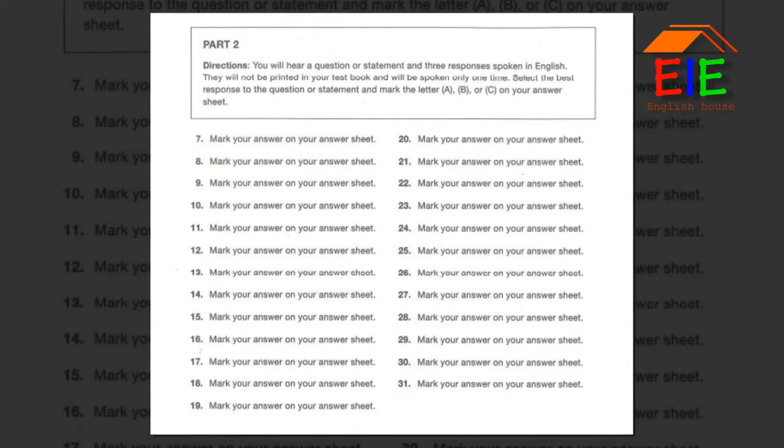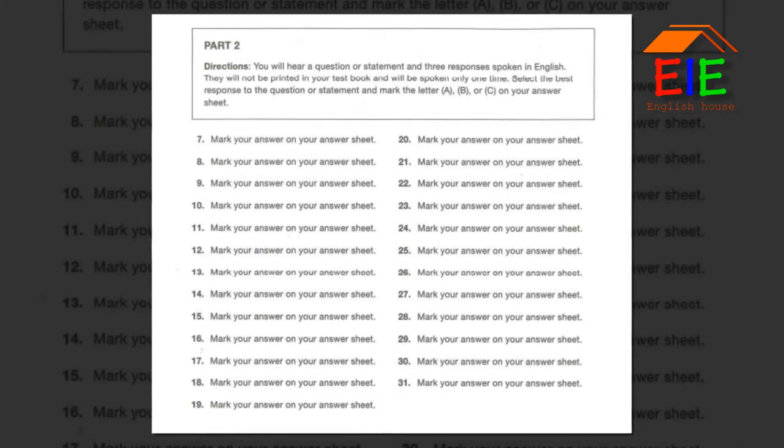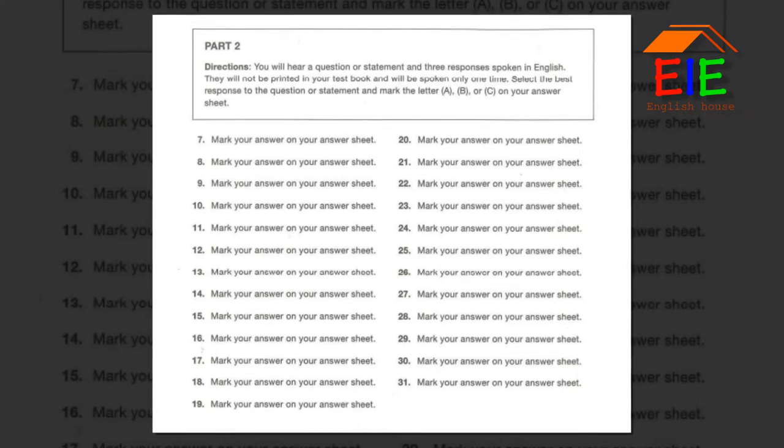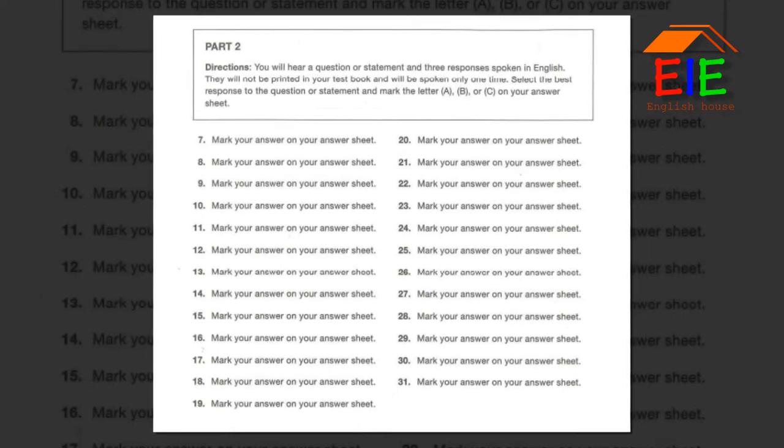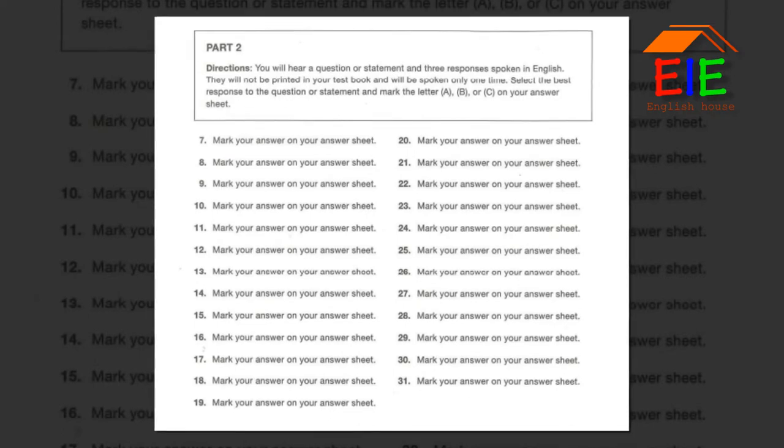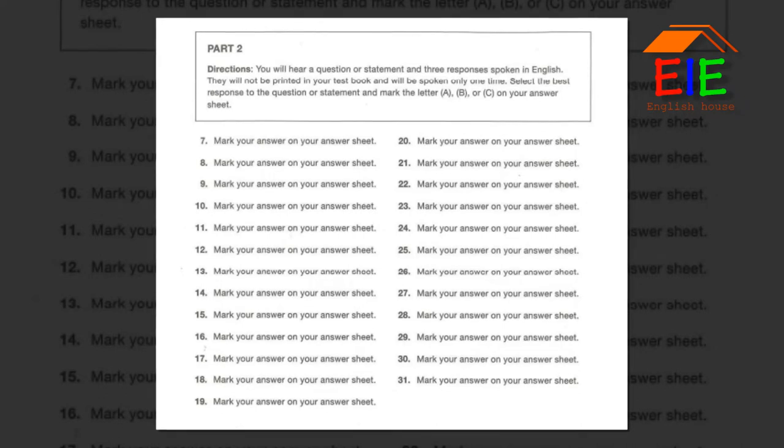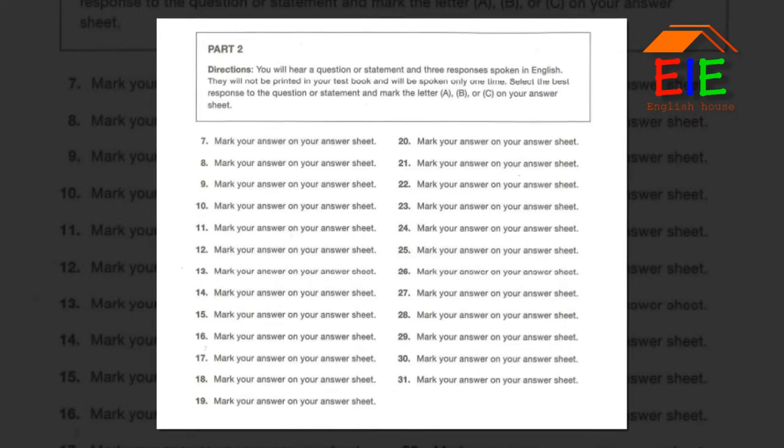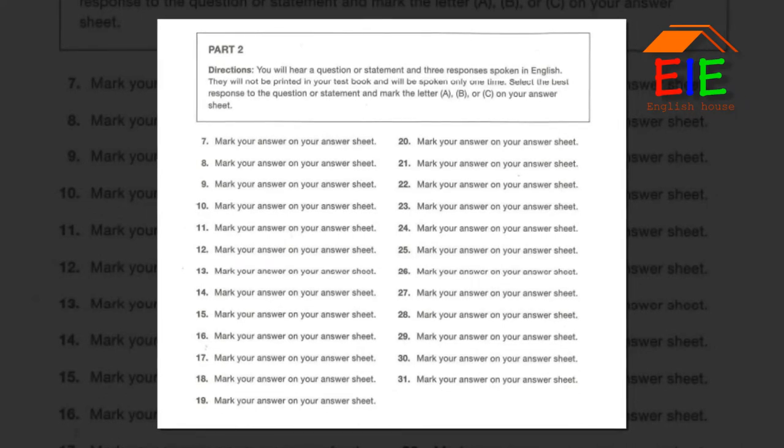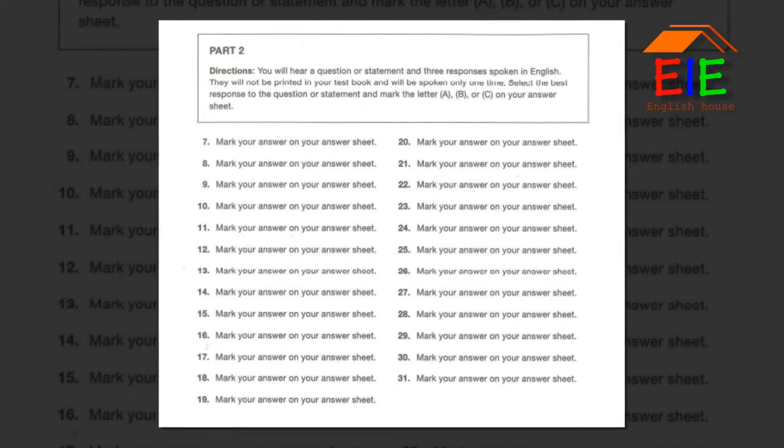Part 2. Directions: You will hear a question or statement and three responses spoken in English. They will not be printed in your test book and will be spoken only one time. Select the best response to the question or statement and mark the letter A, B, or C on your answer sheet. Now, let us begin with question number 7.